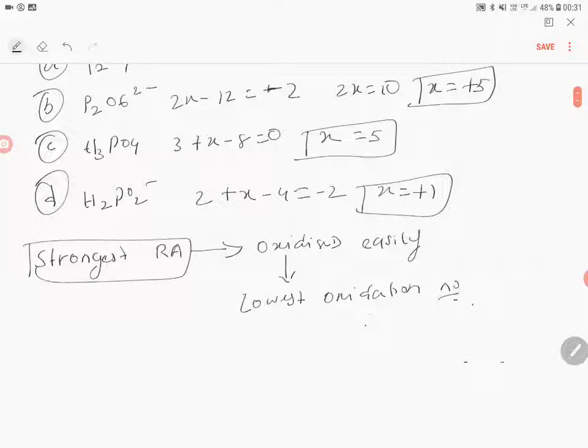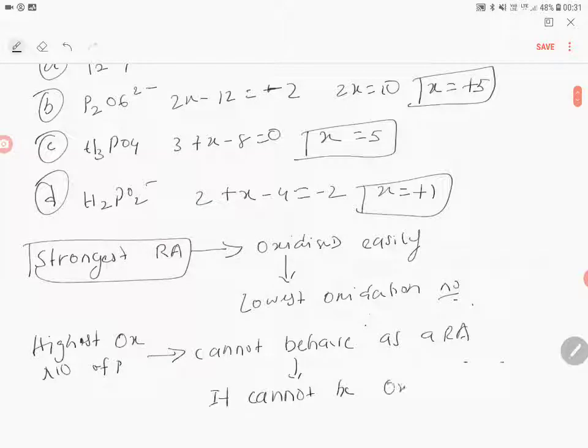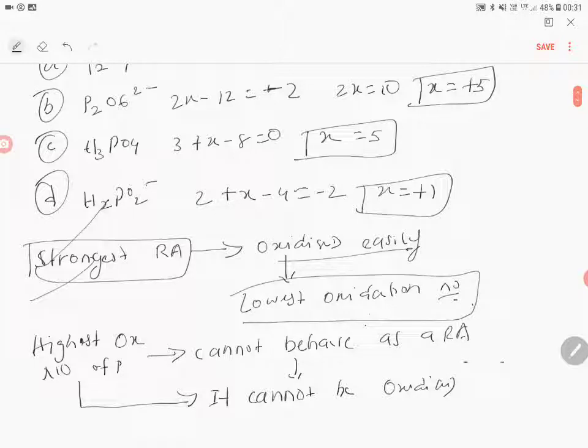The highest oxidation number of phosphorus cannot behave as a reducing agent because it cannot be oxidized. Why? Because it has already attained the highest oxidation number, beyond which it cannot be oxidized.